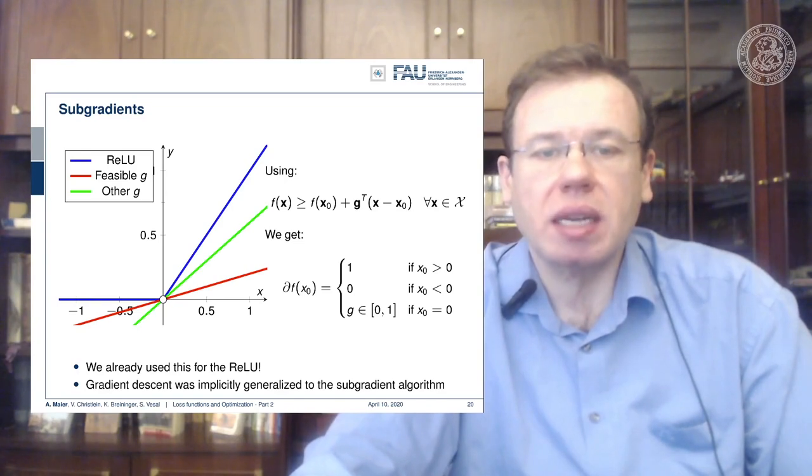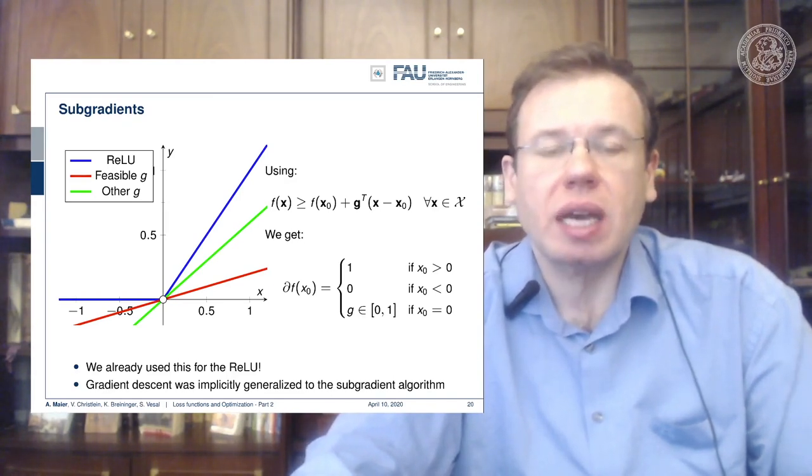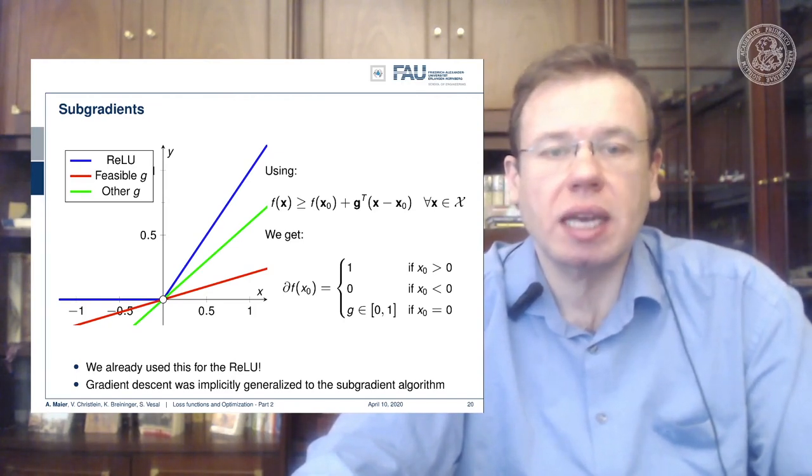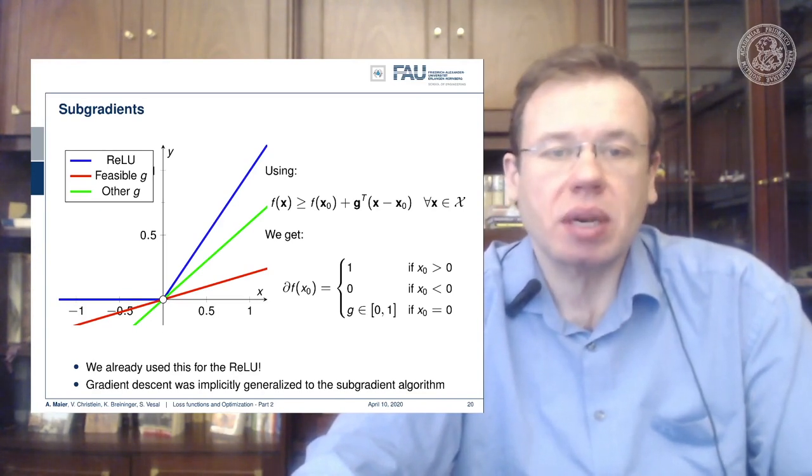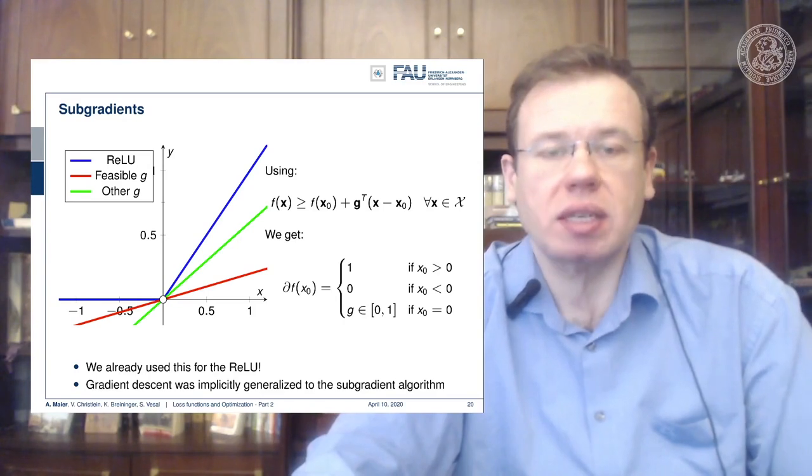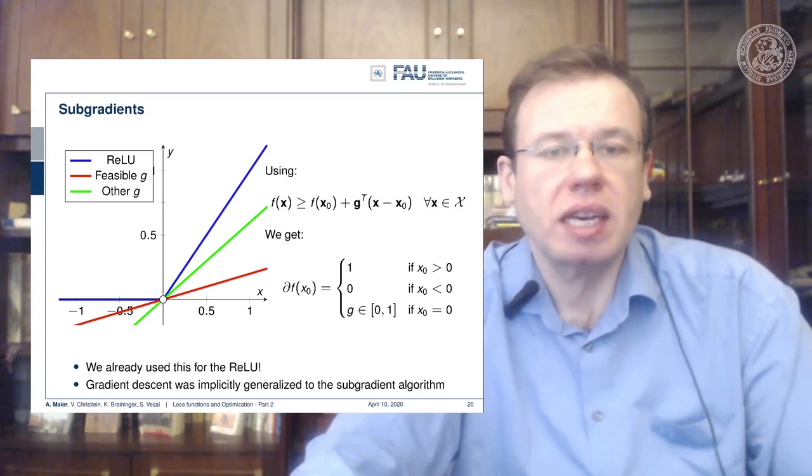So this means that we can now define a subdifferential, and our subdifferential is essentially one where we have x0 greater than zero, we have zero where it's smaller than zero, and we have exactly g, and g can now be any number between zero and one at the position zero. And this is nice because now we can follow essentially this gradient or subgradient direction. It's just that the gradient is defined differently in different parts of the curve.